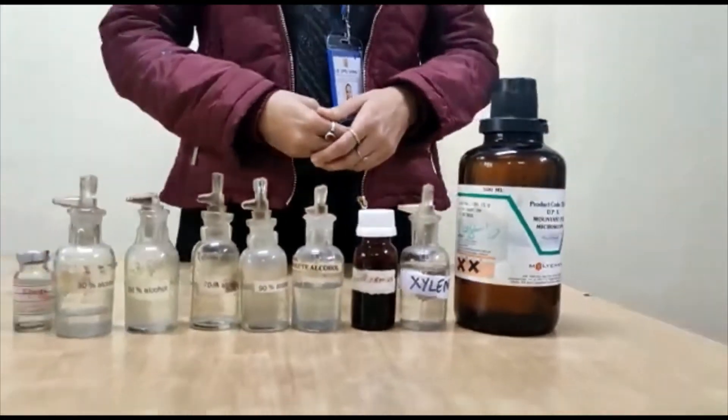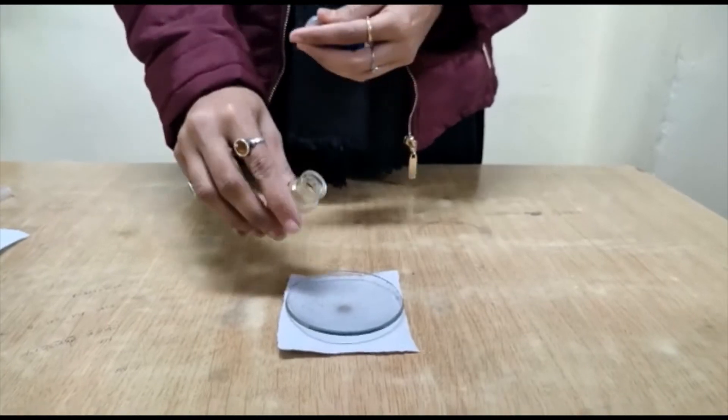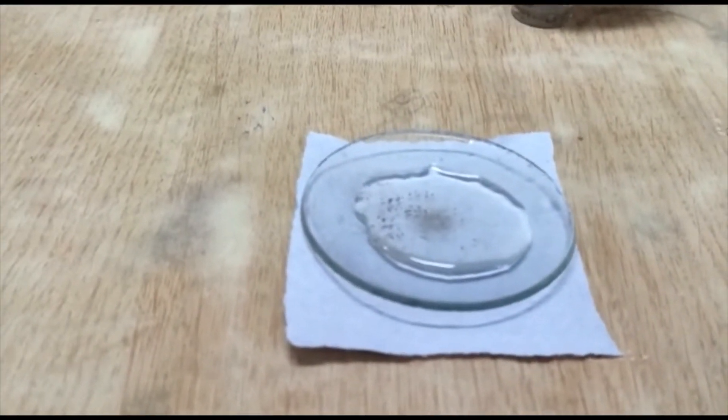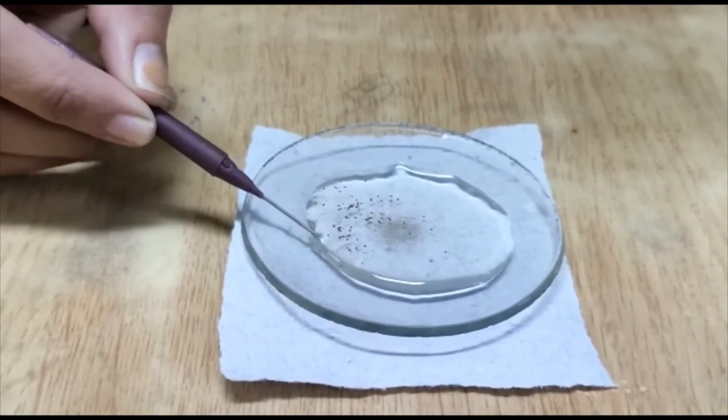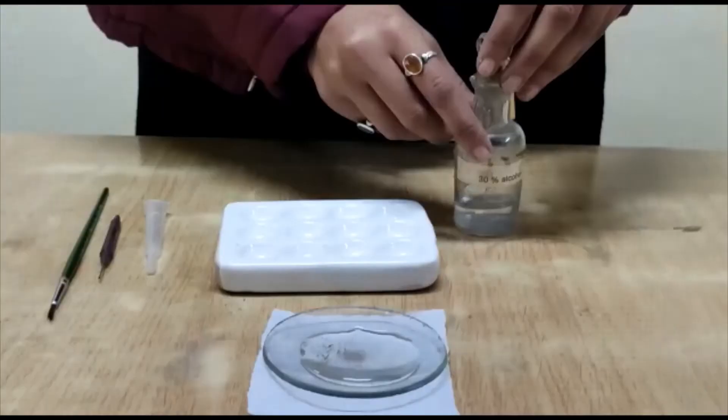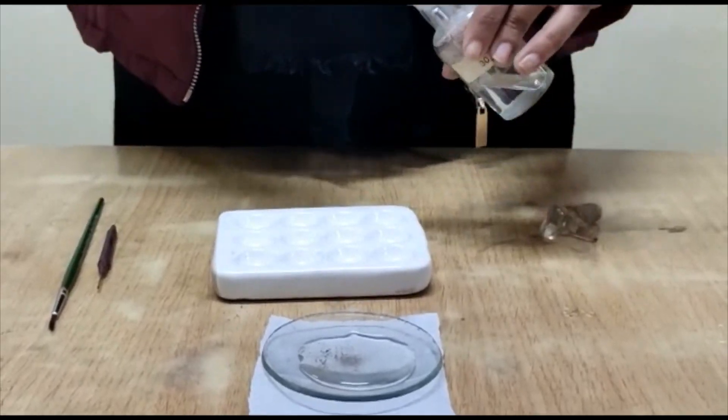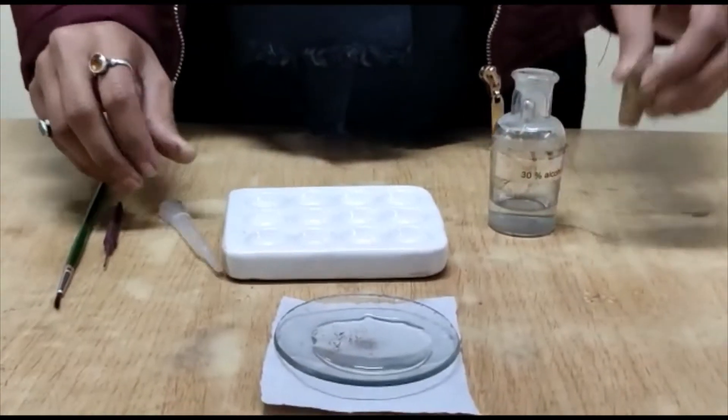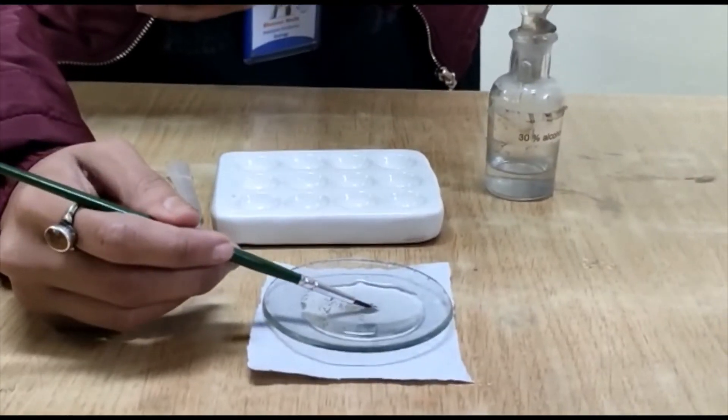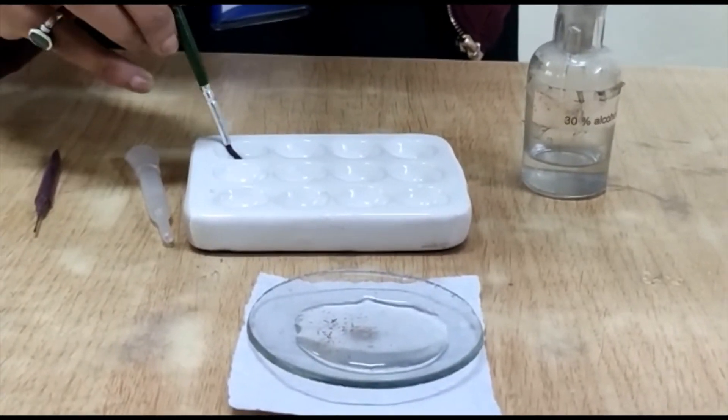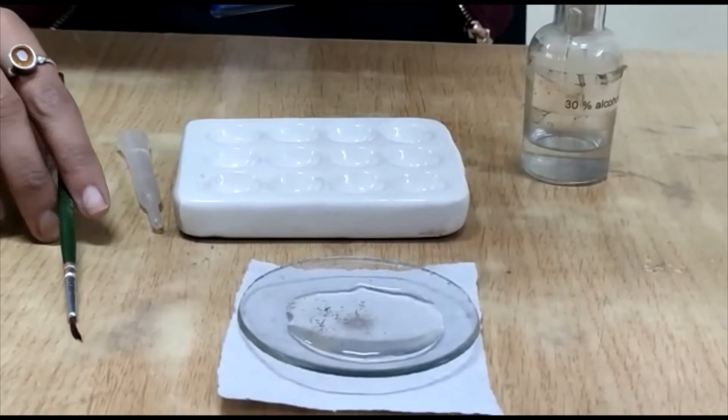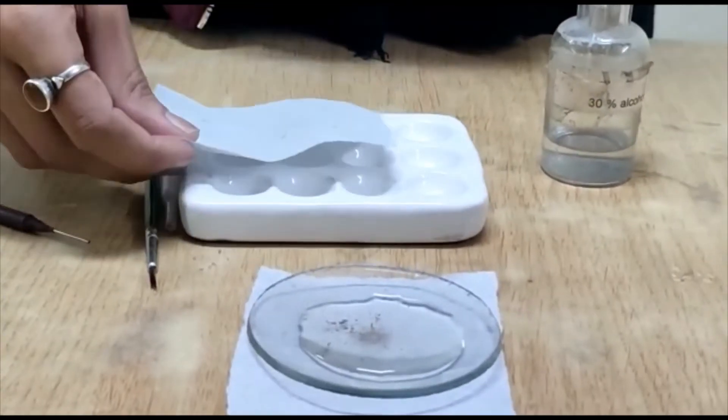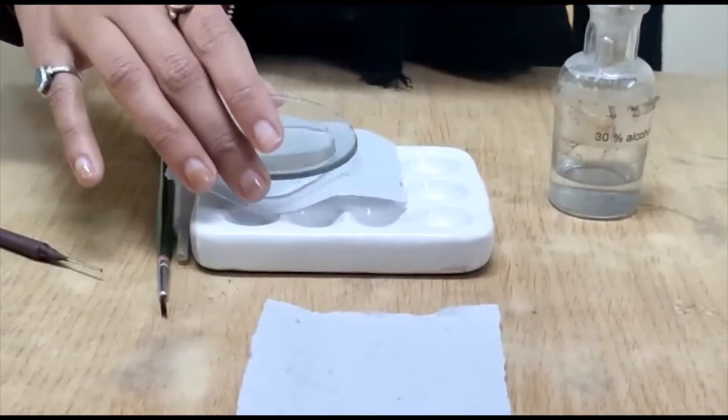Let's proceed. So first we take our samples in the watch glass. As you can see here, these are the gemmules. These are the internal buds found in the sponges, some of the sponges. So first we take some drops of 30% alcohol in our staining tray and transfer few gemmules in this 30% alcohol. And finally, cover this alcohol with sample and wait for 5 minutes.